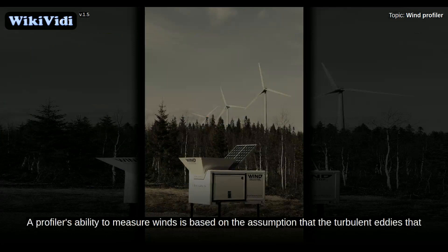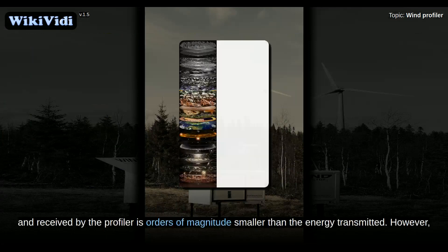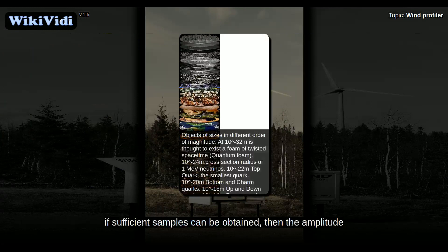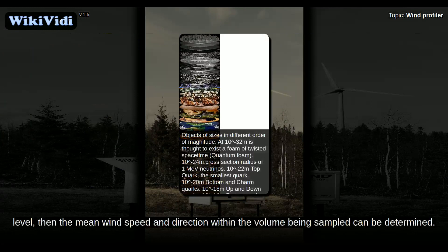A profiler's ability to measure winds is based on the assumption that the turbulent eddies that induce scattering are carried along by the mean wind. The energy scattered by these eddies and received by the profiler is orders of magnitude smaller than the energy transmitted. However, if sufficient samples can be obtained, then the amplitude of the energy scattered by these eddies can be clearly identified above the background noise level, and then the mean wind speed and direction within the volume being sampled can be determined.